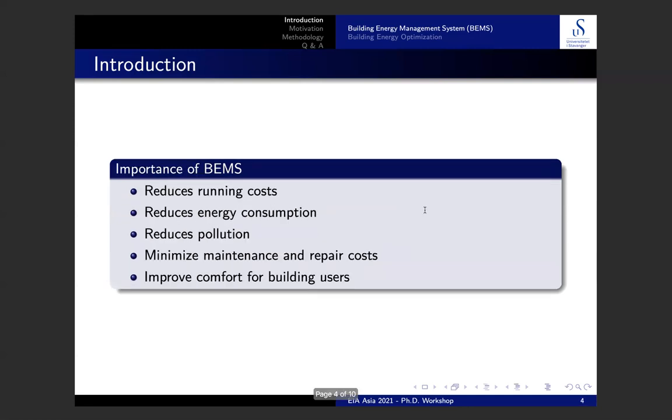So why we need a building energy management system? Here I have mentioned five key benefits. It helps to reduce the running cost of the building, energy consumption of the building and the CO2 emission of the building as well. It's stated that the building energy management system can control approximately 84% of the total building energy consumption.